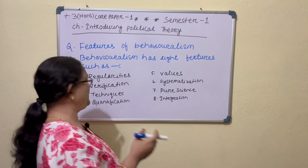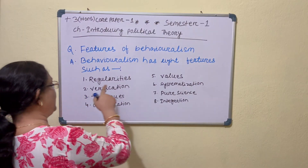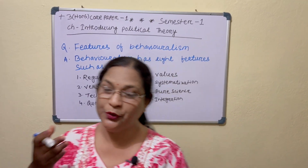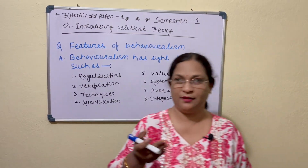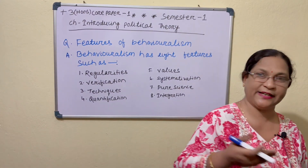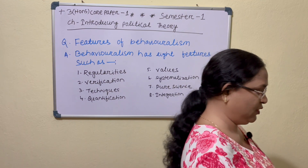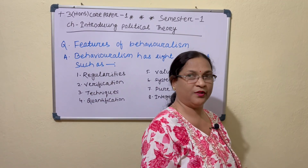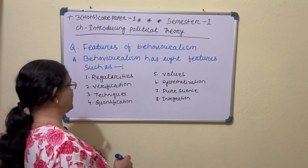I am going to explain all the points one by one. Your first point is Regularities. Regularities stands for the subtle uniformities of political behavior which can be expressed in value-like statements, facilitating explanation and prediction of political phenomena. Your second point is Verification.